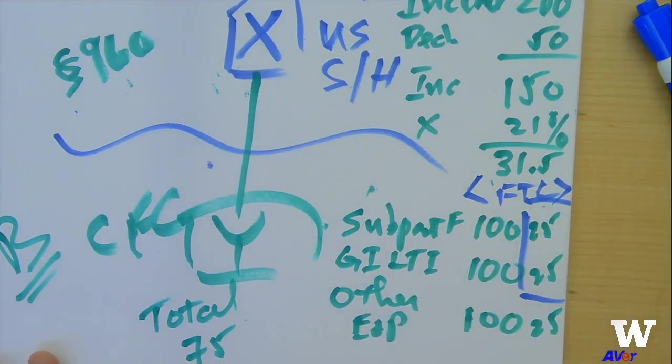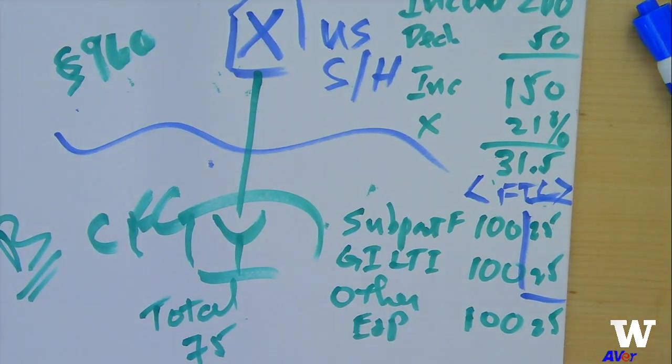Has X received the cash yet? Let's assume the cash is still sitting down there. How does the cash get back up to X, assuming there is any cash?